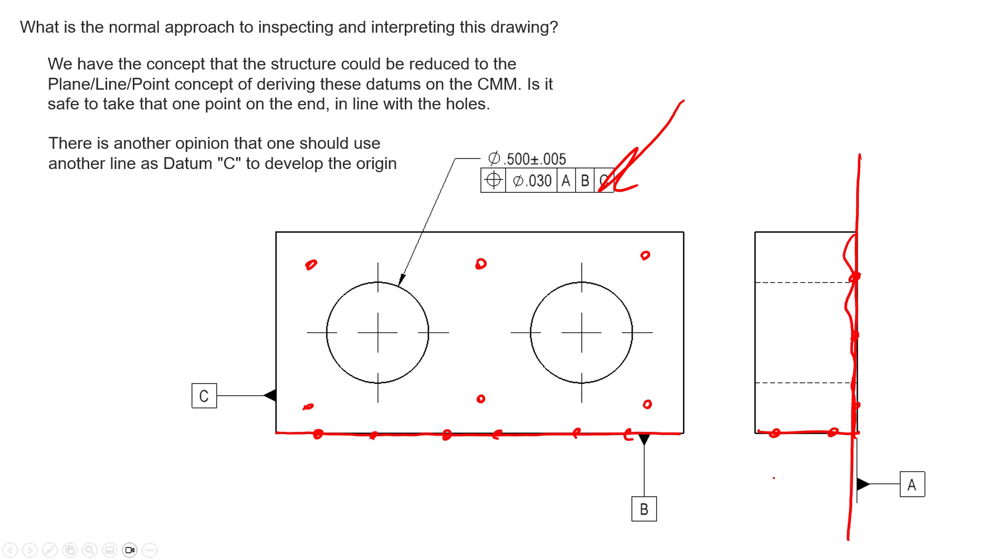The two high points from that point cloud, so if that surface does deviate in a little bit or maybe there's a little bit of form error, those two high points will establish datum plane B. The two high points as well as perpendicularity to A will create datum plane B.